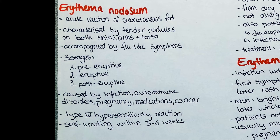Erythema nodosum is an acute reaction of subcutaneous fat tissue. The disease presents with tender nodules usually on both shins, arms and a torso. Patients also experience flu-like symptoms like fever, malaise and fatigue. The disease progression is divided in two or three stages depending on the used literature, so in case your book states the disease has two stages, just forget about the last one.